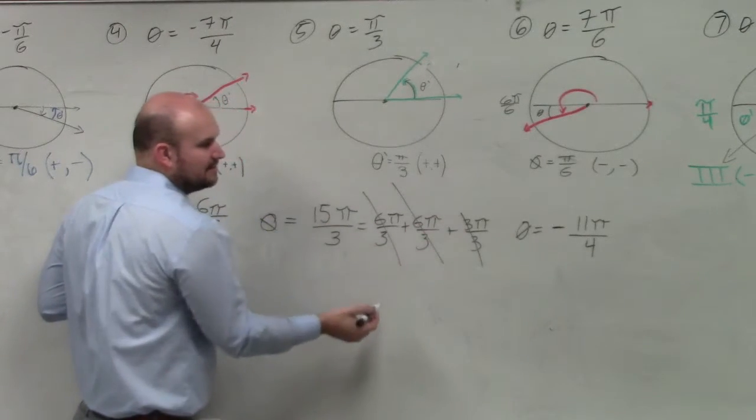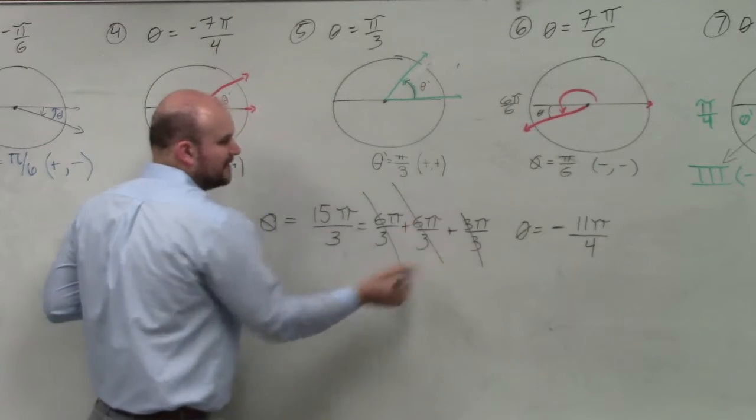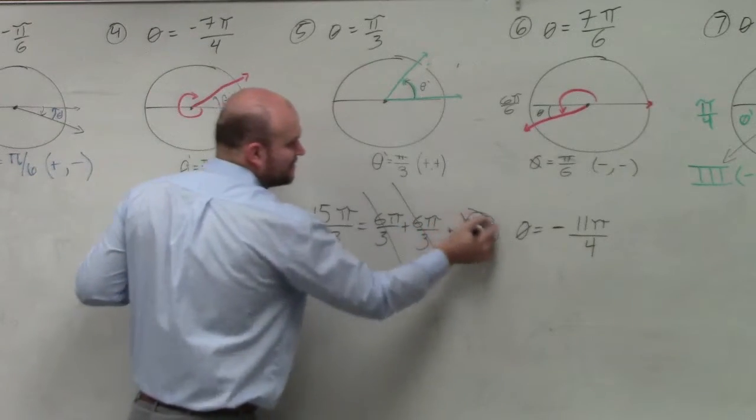So these are all just redundants. And really, 3 divided by 3 goes to pi. So that's just going to leave me with pi.